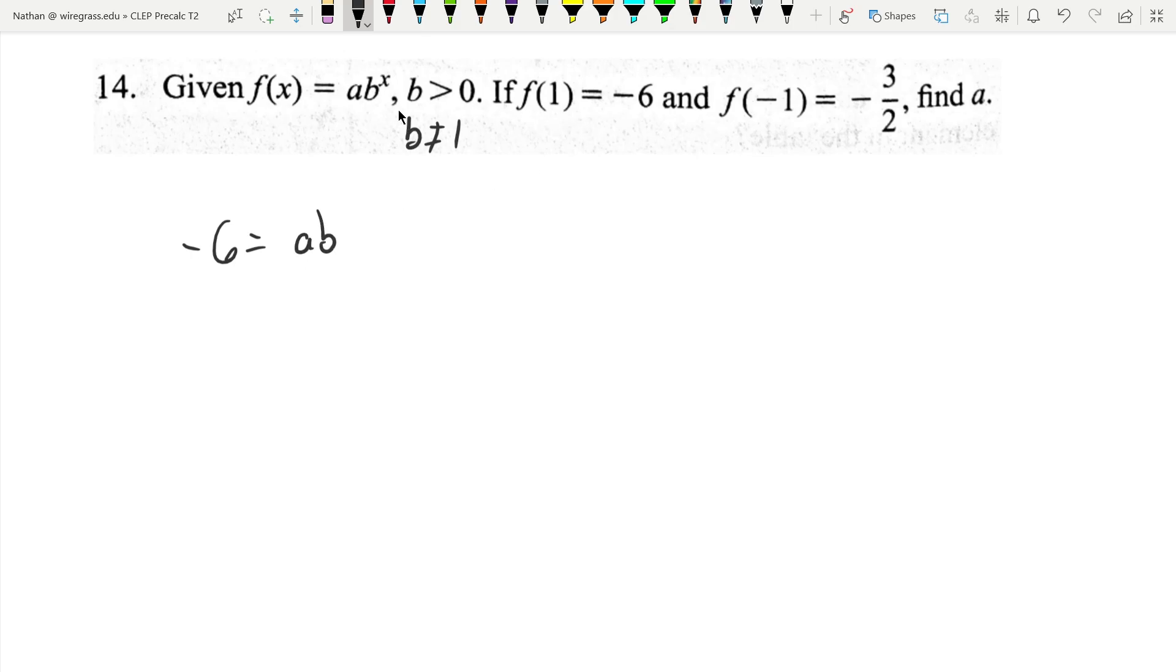This equals ab to the power of one, but that's just power one, so that's all it is. And then f(-1) is negative three-halves, so again negative three-halves equals ab to the negative one.